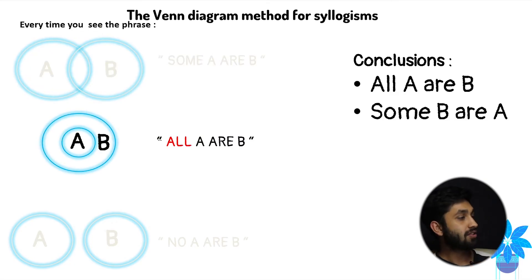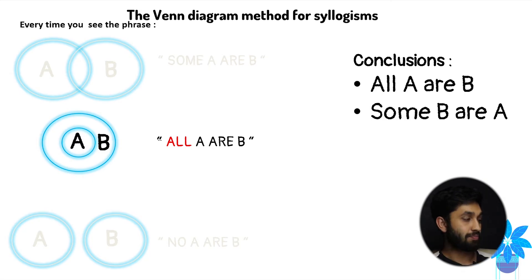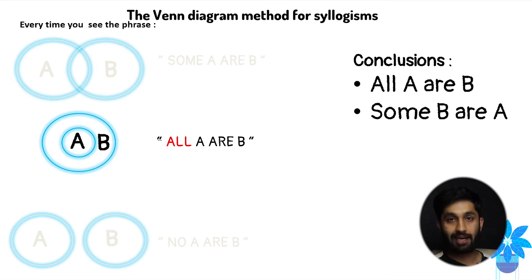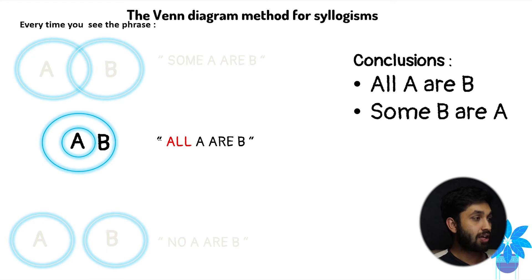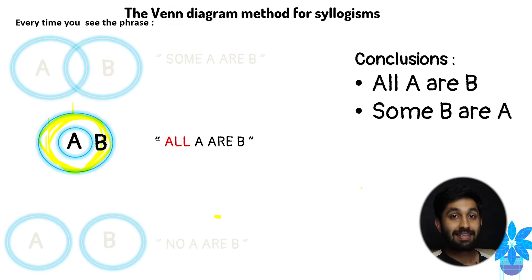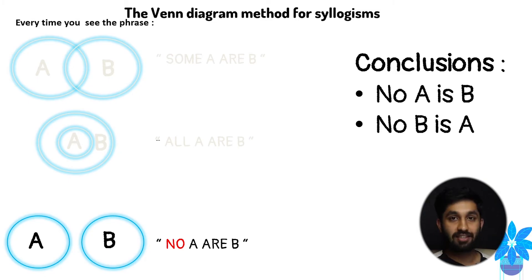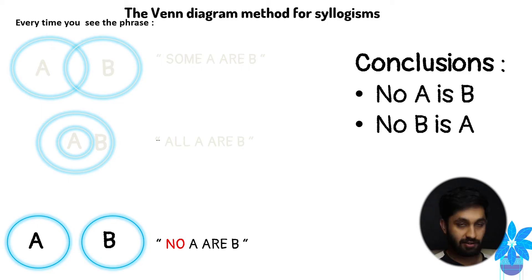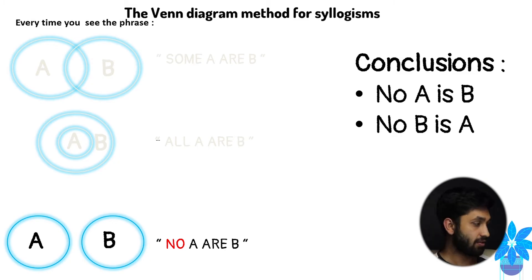Now the second phrase: 'all A are B' — we draw A inside B, like a dartboard with A in the middle. The conclusions are 'all A are B' and 'some B are A'. For the third phrase — 'no A are B' — there's literally no overlap because there's no relationship between the two, so the conclusions are 'no A is B' and 'no B is A'. These three phrases are the most common in syllogisms.